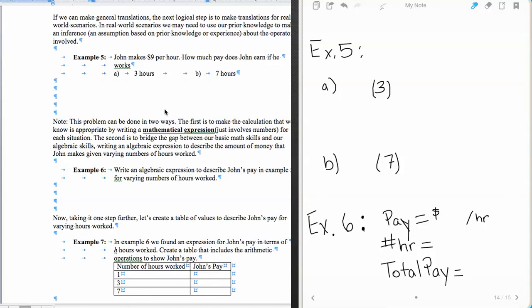So our first example, example 5, John makes $9 per hour. How much pay does John earn if he works three hours or seven hours? Well, $9 per hour...